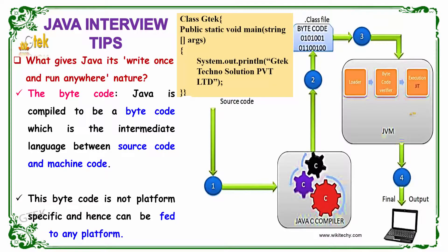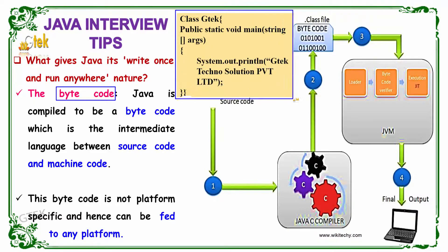What gives Java its write once and run anywhere nature? Java has the bytecode. Whenever you compile a Java program, it is initially compiled into a bytecode, which acts as the intermediate language between your source code and machine code.